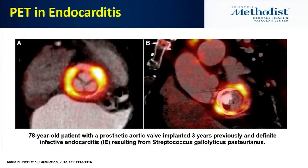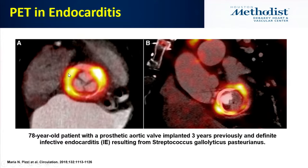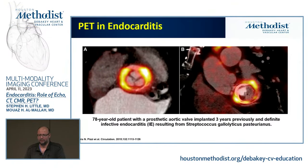Switching gears to the role of PET — this is an area that is not done very much in the United States. In Europe it has become almost like echo as the main tool for assessment of endocarditis, and most of the published studies come from Europe. You can see very intense FDG uptake around prosthetic valves, signaling endocarditis in the proper setting. FDG is not going to give you a tissue diagnosis, and we'll go through some of the challenges.